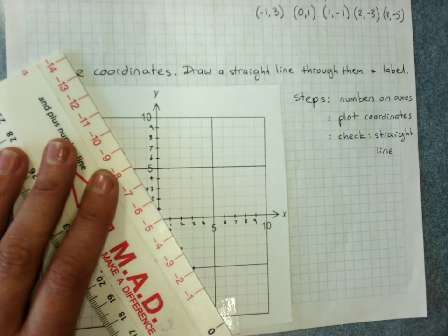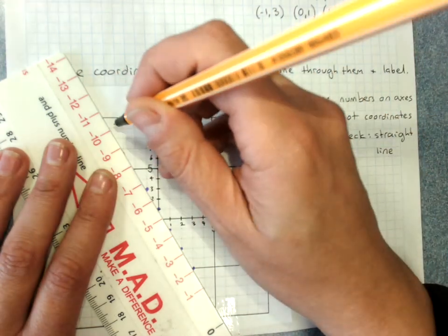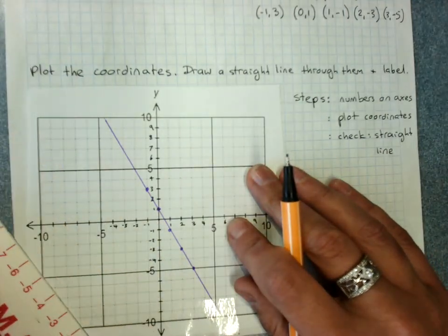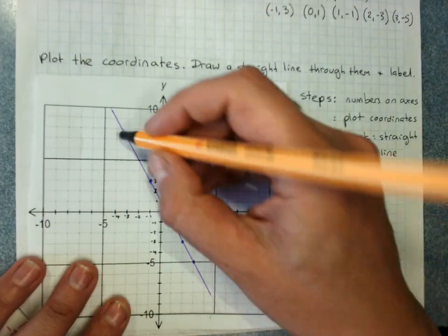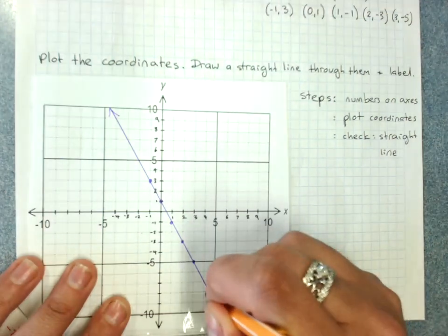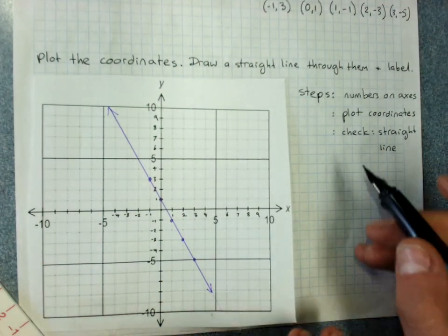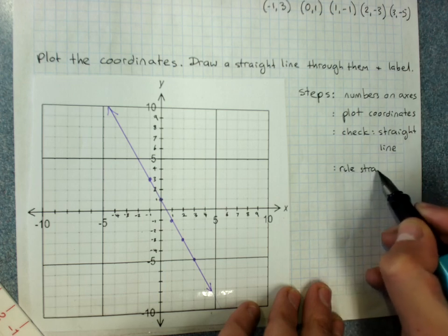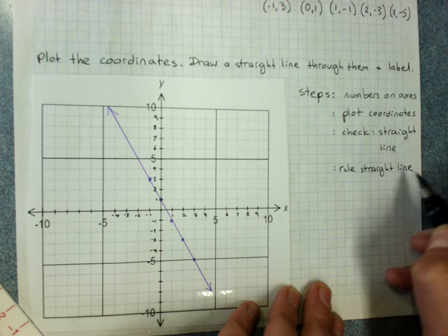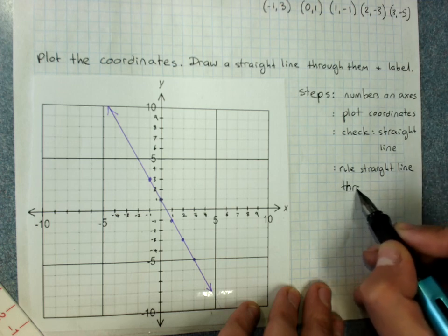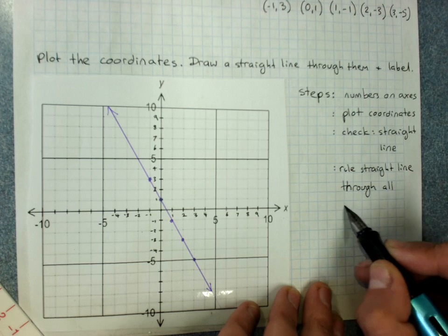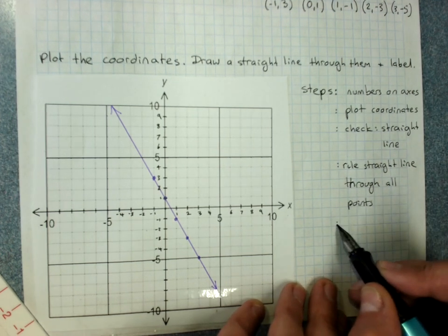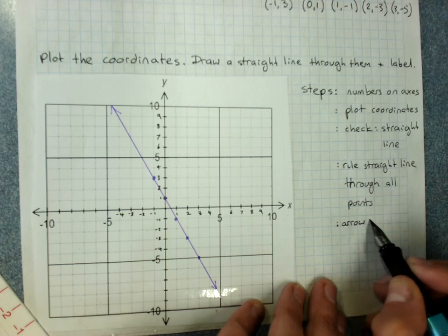Use a ruler. And put a straight line all the way along the whole number plane with a ruler. Put an arrow at each end. So let's write those steps down. Rule a straight line through all the points. Arrows at each end.